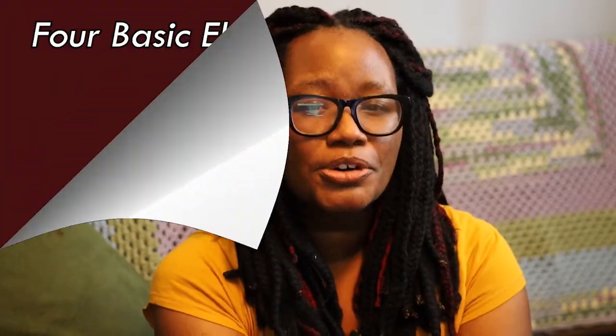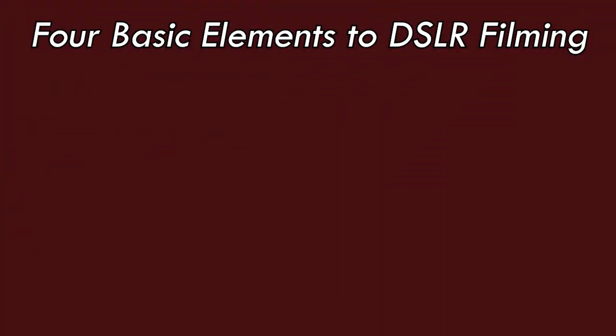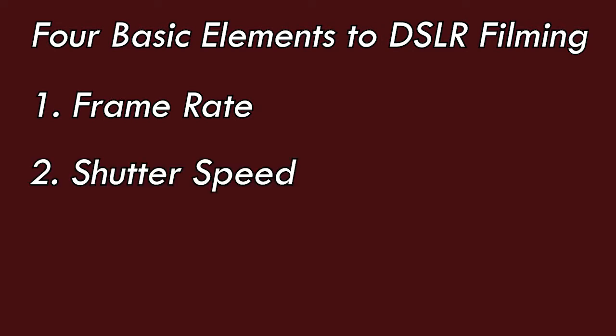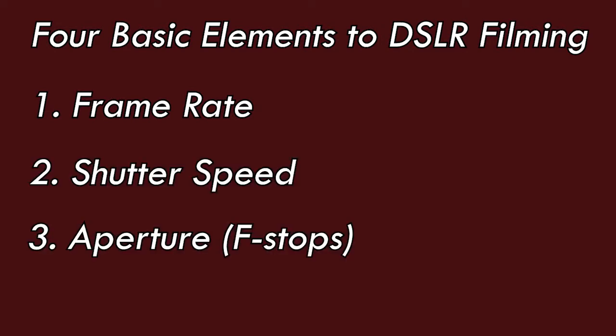In this video, as you're practicing in manual mode, we're going to focus on four basic elements. Those elements are frame rate, shutter speed, aperture — which is measured in f-stops — and ISO.